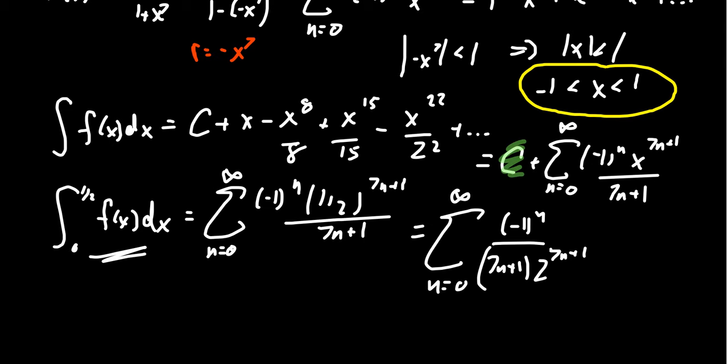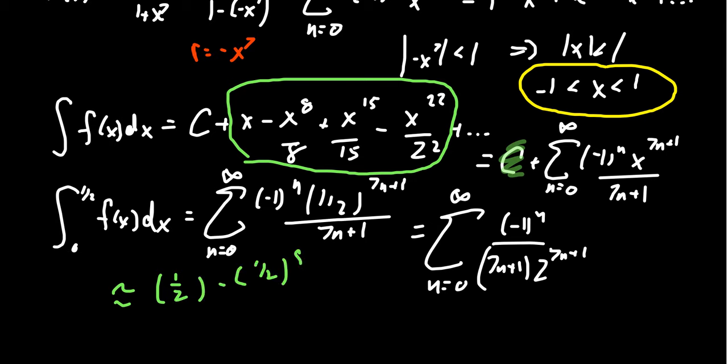Which partial sum should we use? Well, it depends on how accurate we want to be. The original problem didn't specify any level of accuracy. What if we were just to use the first four terms? Because I mean, that's what I see on the screen right here. I noticed I stopped here at the x to the 22. So if we just take these four terms right here, what we're going to see is that our integral is approximately the same thing as one half minus one half to the eighth over eight plus one half to the 15th over 15 minus one half to the 22nd over 22. And so this is the first four terms of our power series.